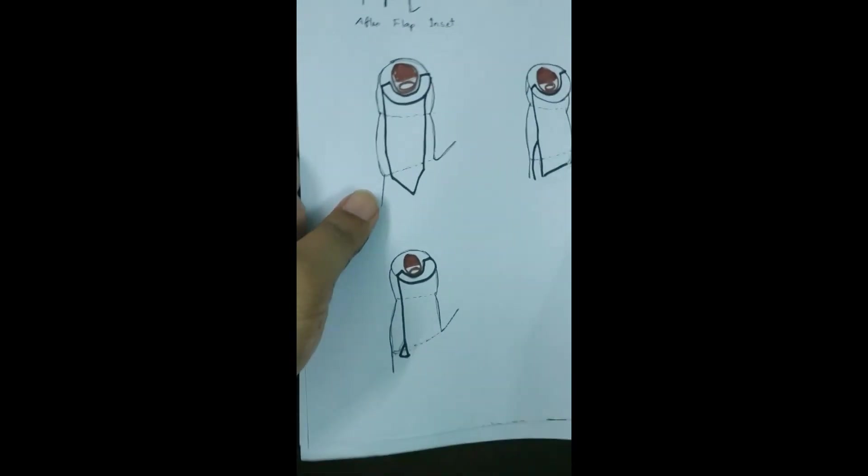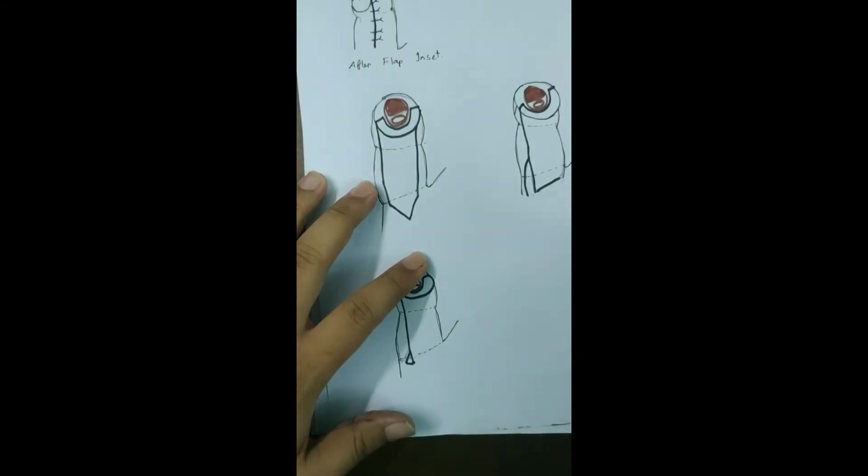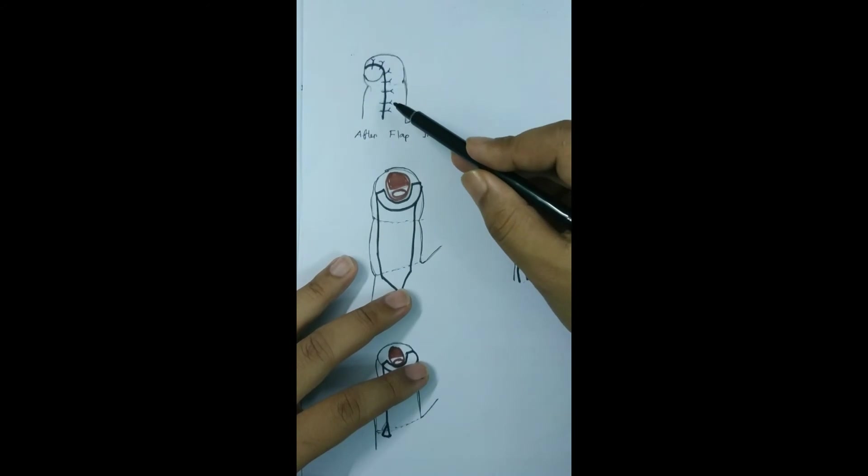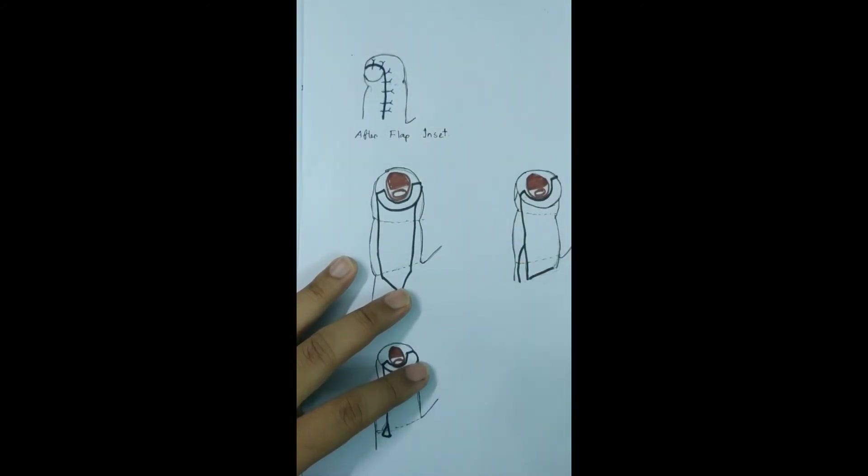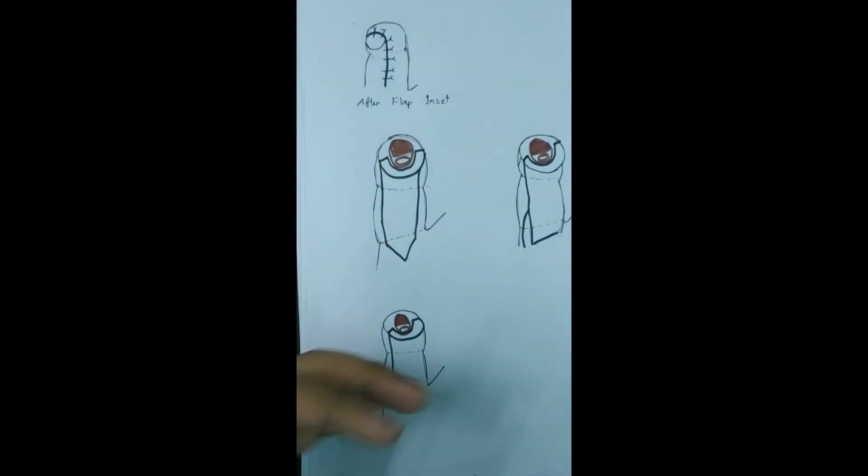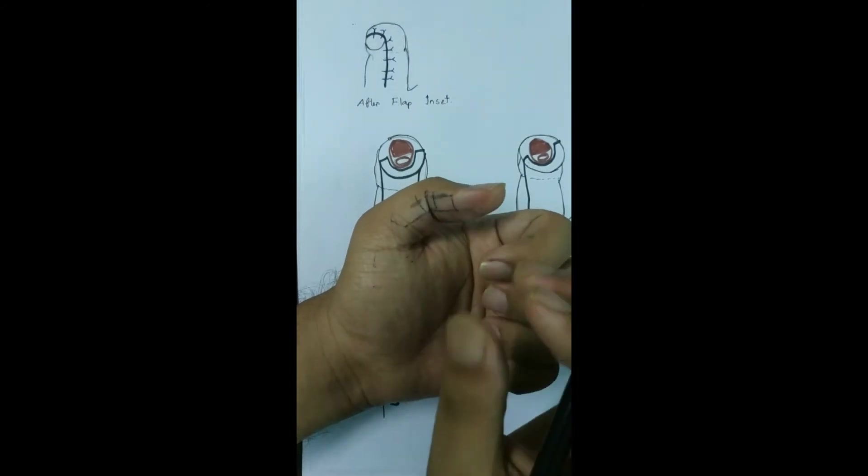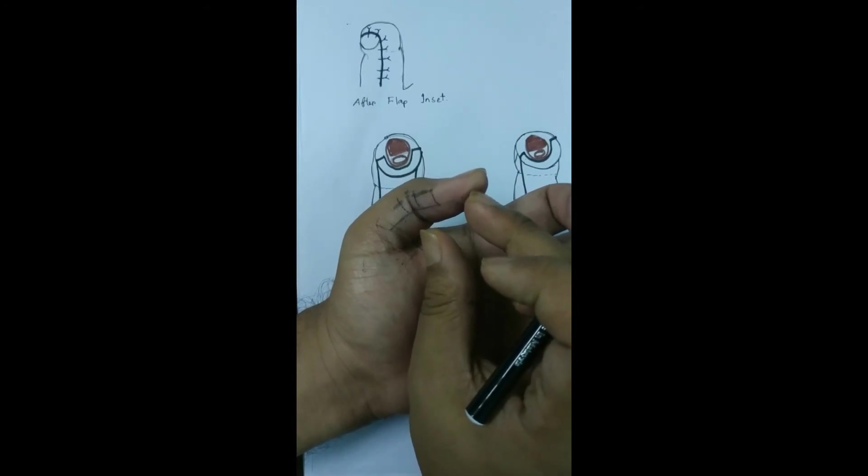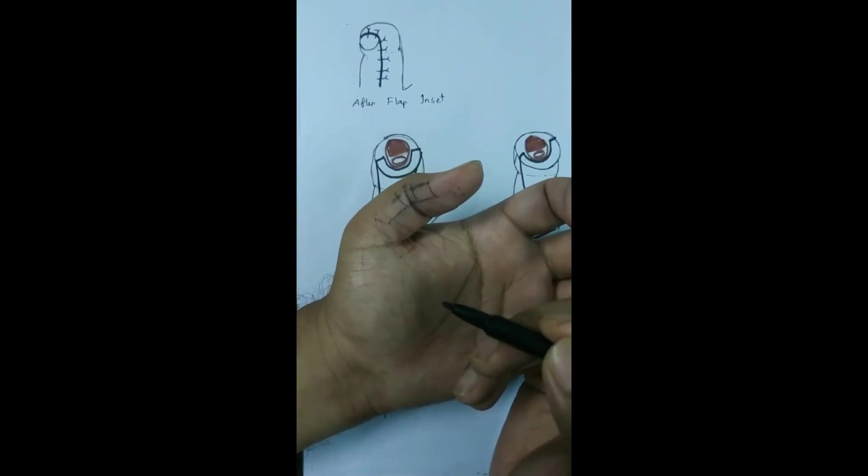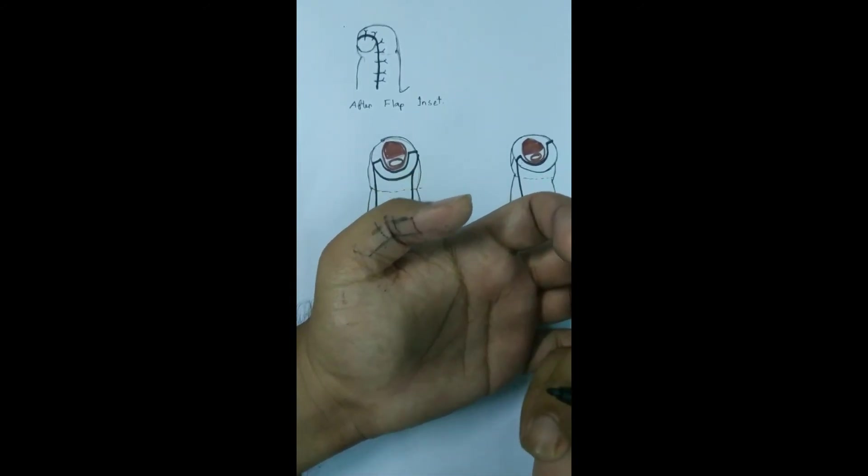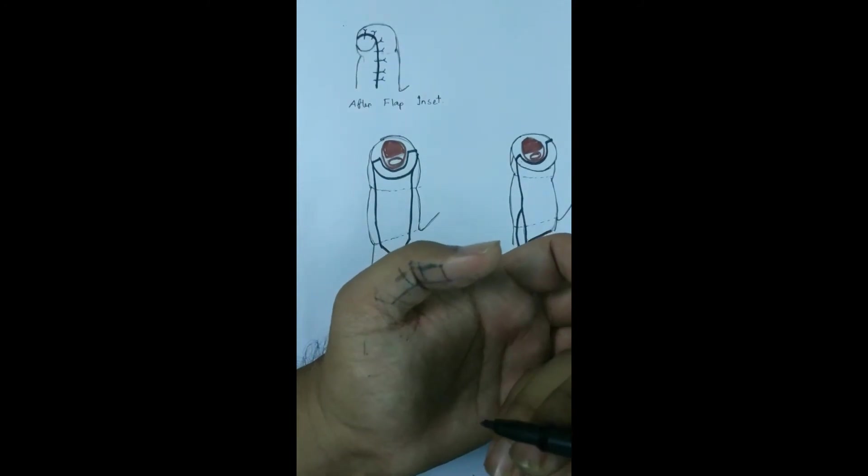The final result of the Moberg flap should look like this. Now if we don't get enough advancement, we have four options. First, we can slightly flex the IP joint and close the defect directly. It won't cause any problem or much problem in the postoperative period. If it causes issues, with some physiotherapy it will get better.